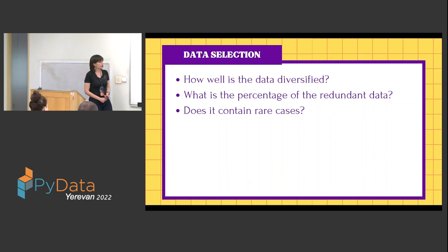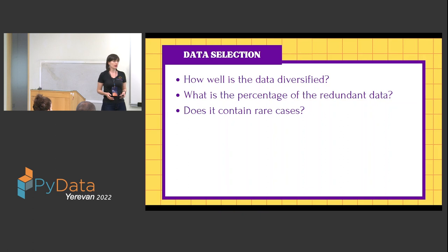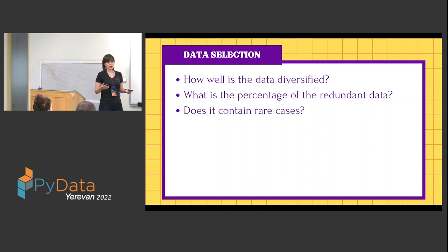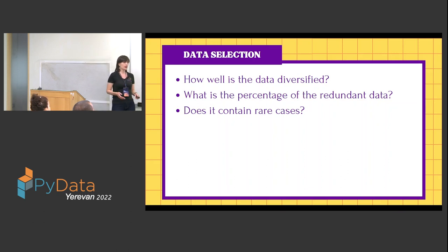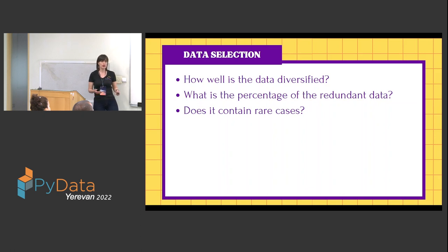We understand that data should be optimized. Now the question is: how do we select our data? We need to answer several questions — how well is our dataset diversified, what is the percentage of redundancy, and how many rare cases are there? In real life, edge cases should be included, which may not yet be available in our dataset.